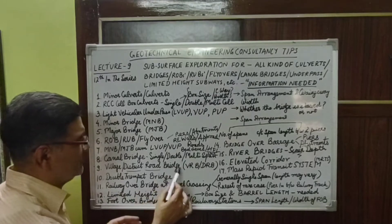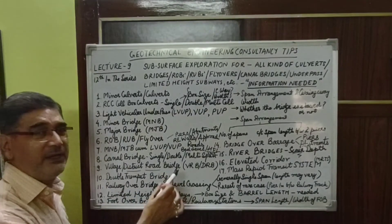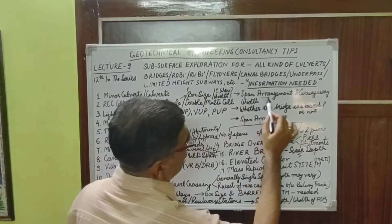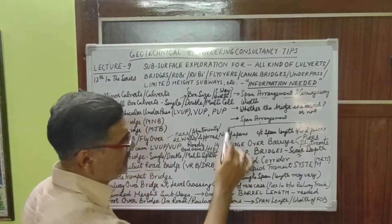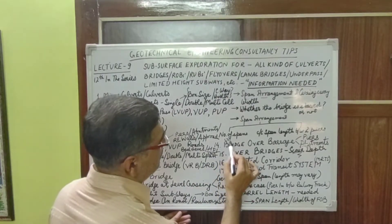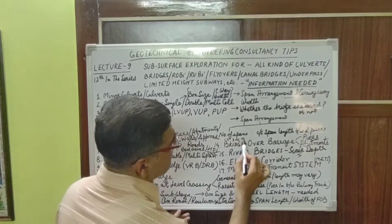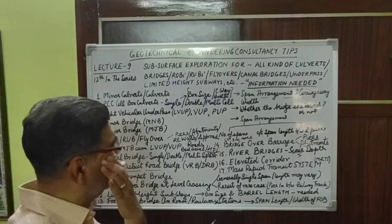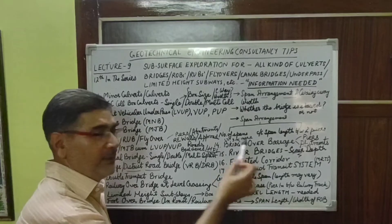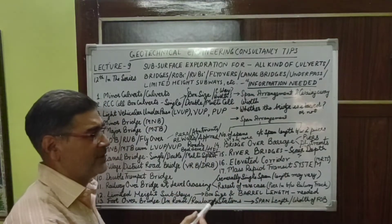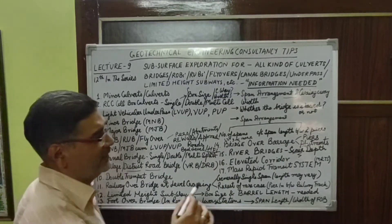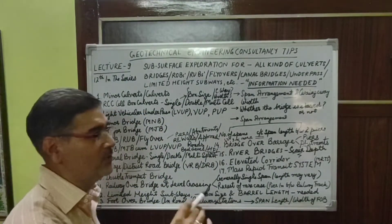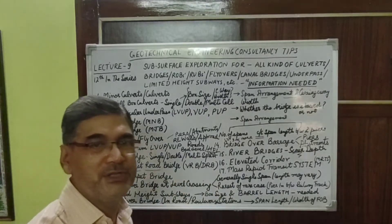Village road bridges and district road bridges are also bridges which the irrigation department usually constructs. In this case we need to check the span arrangement, which generally covers two things: the number of spans, which may be one, two, three or more, and the center-to-center distance between two consecutive pier locations. These bridges are generally simply supported. We need to know the center-to-center span length in order to calculate the differential settlement.